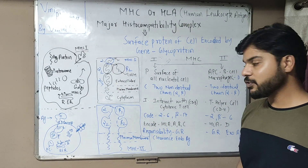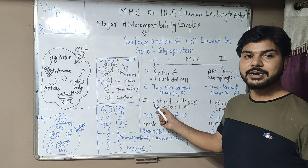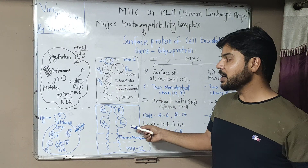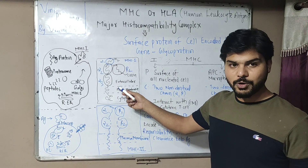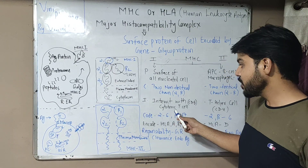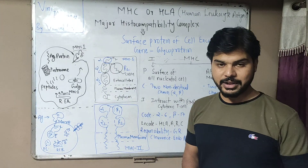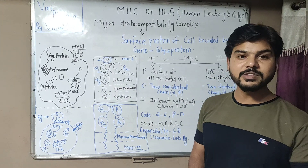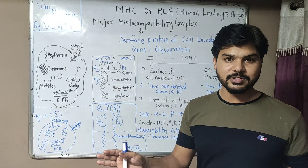The third difference is in how they interact. MHC Class 1 complex interacts with cytotoxic T-cells. There are two types of T-cells, and MHC Class 1 is associated with cytotoxic T-cells.